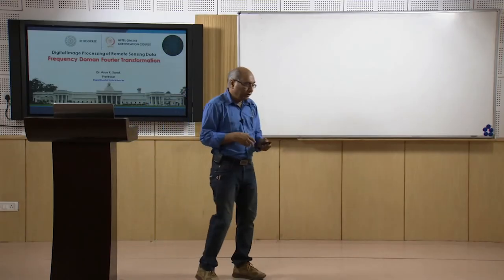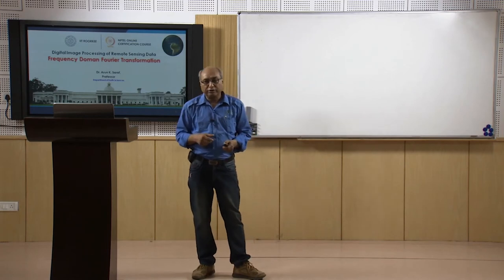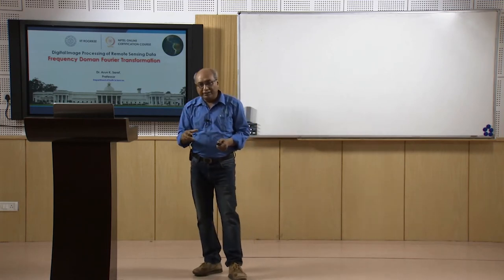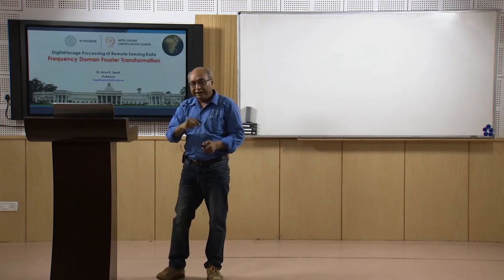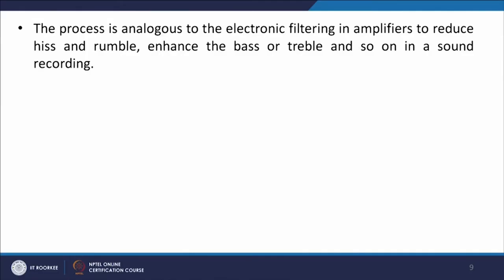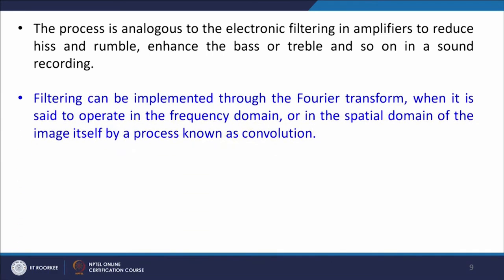Basically, the concept of filtering techniques has come from electronics, where in audio or video some noise is coming and you want to remove it. You identify that frequency and then remove that frequency wave from the total signal. The process is analogous to electronic filtering in amplifiers to reduce hiss and rumble, enhance the bass or treble, and so on in sound recording. Filtering can be implemented through the Fourier transform when it is said to operate in the frequency domain, or in the spatial domain of the image itself through convolution.